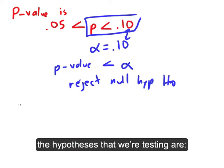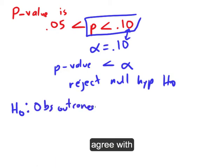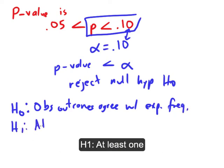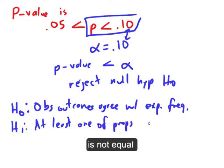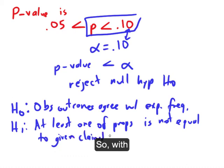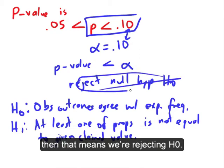And if you remember how this works, the hypotheses that we're testing are H0 is that the observed outcomes agree with the expected frequencies. And then H1 is that at least one of the proportions is not equal to the given claimed value. Okay, so with our p-value being less than alpha and us rejecting the null hypothesis, then that means we're rejecting H0.